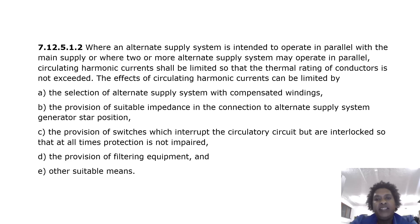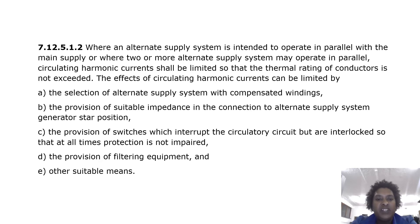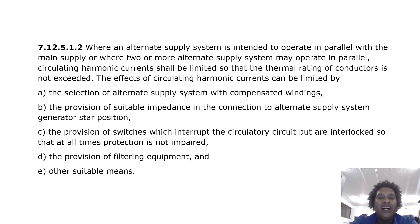Where an alternate supply system is intended to operate in parallel with the main supply, or where two or more alternate supply systems may operate in parallel, circulating harmonic currents shall be limited so that the thermal rating of conductors is not exceeded. The effects can be limited by: selection of alternate supply systems with compensated windings; provision of suitable impedance in the connection to the alternate supply system at the generator star point; provision of switches which interrupt the circulatory circuit but are interlocked so that protection is not impaired; and provision of filtering equipment and other suitable means.